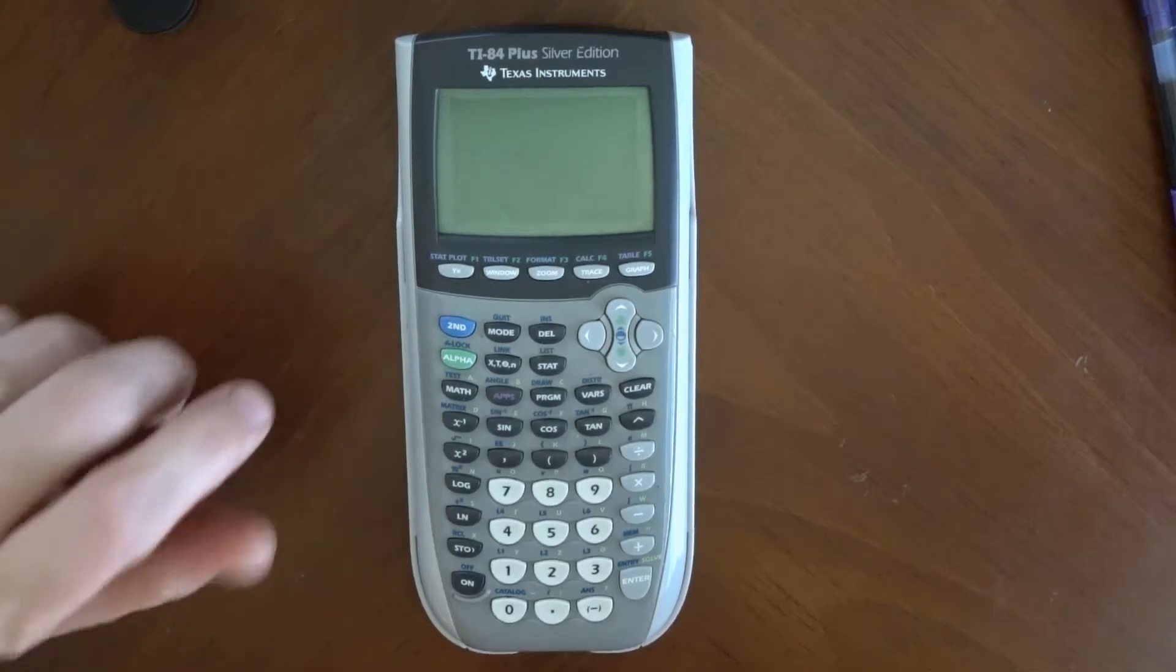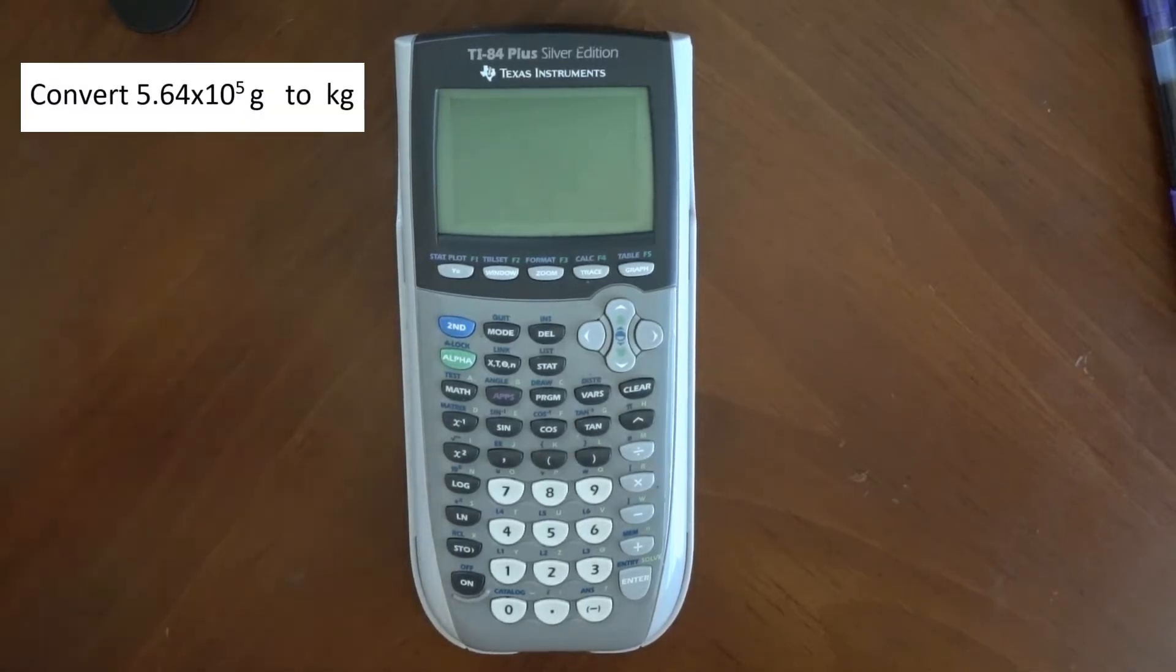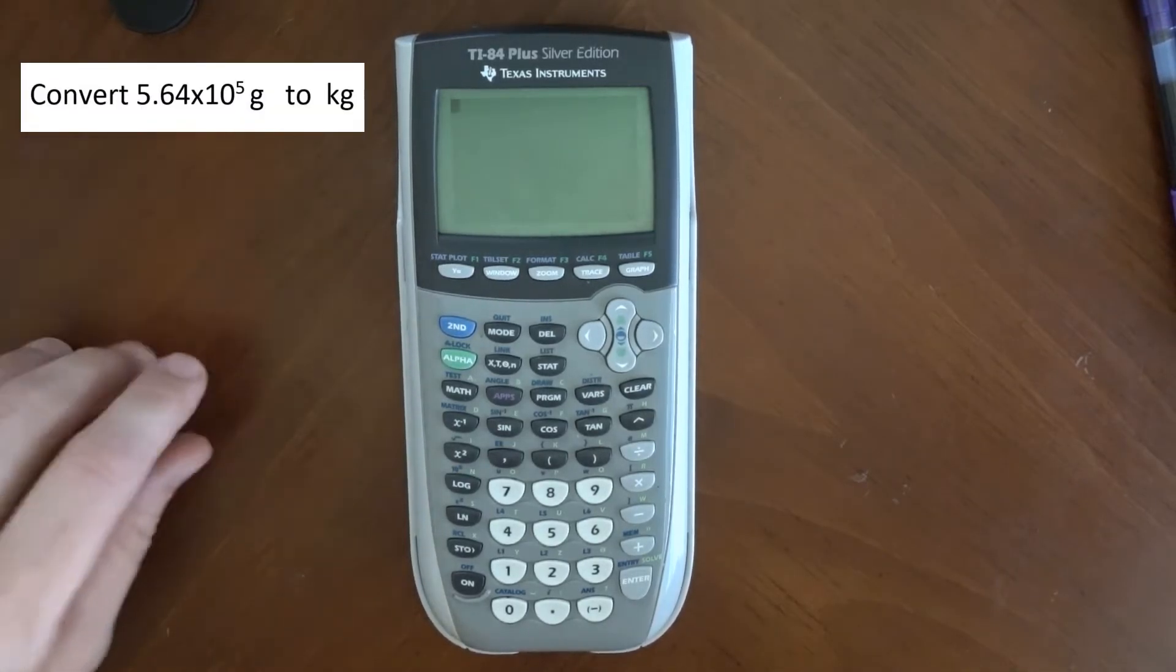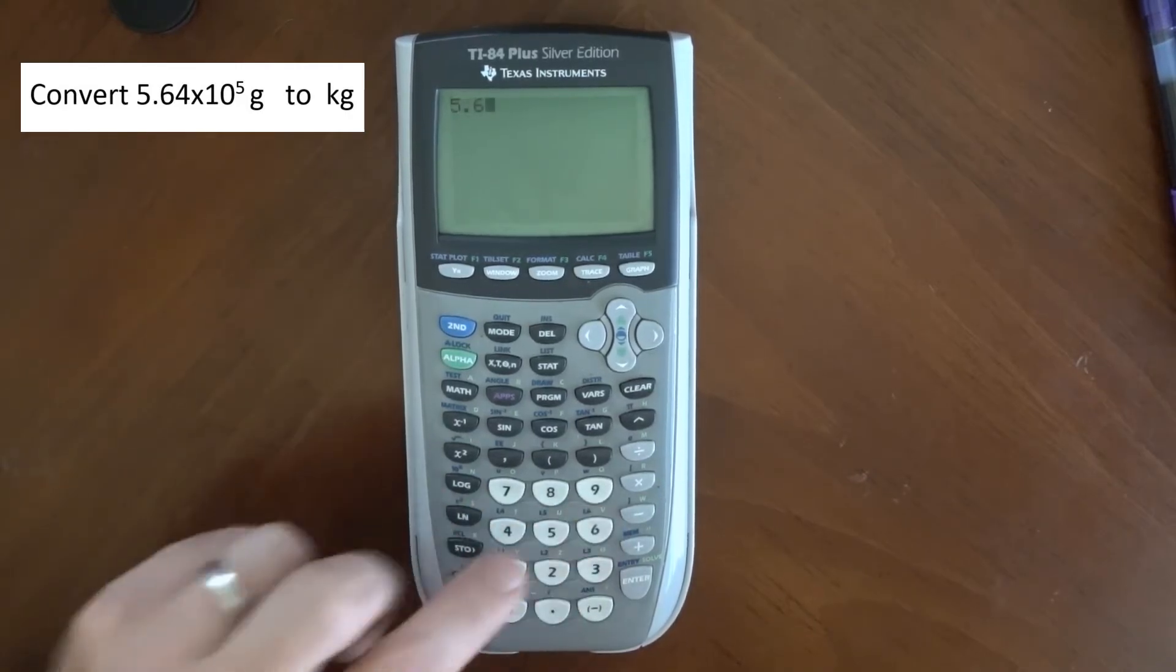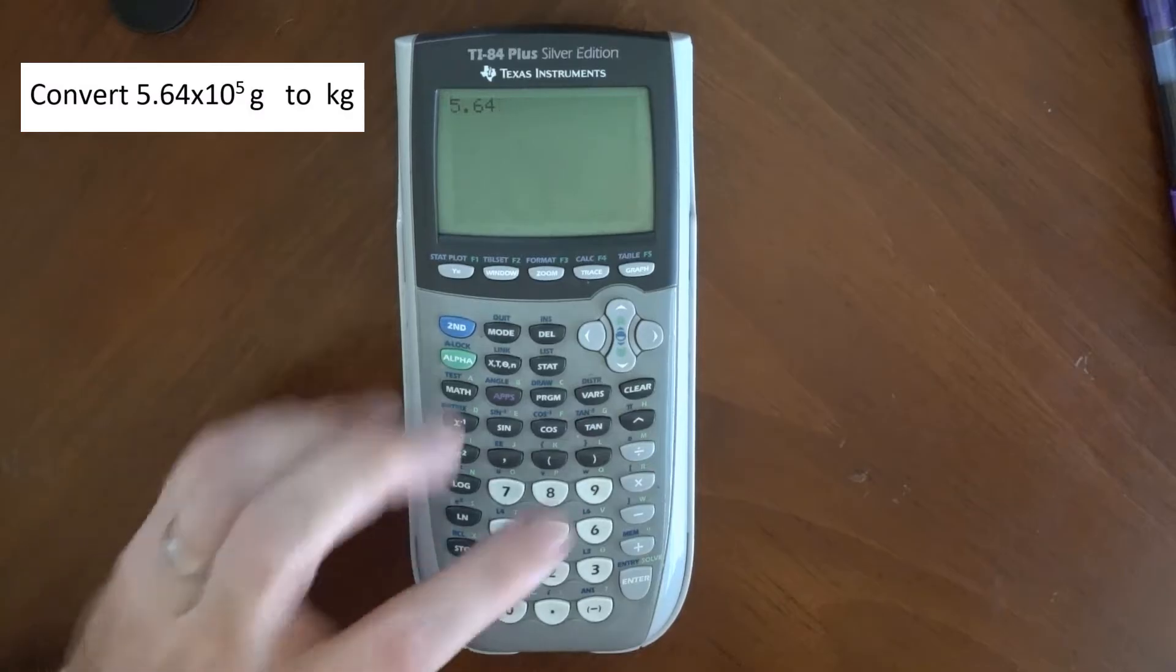In the problem we've done previously, 5.64 times 10 to the 5th grams to kilograms, the way I need to enter this in my calculator is 5.64, and then you might be tempted to do this.